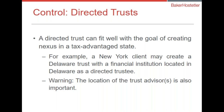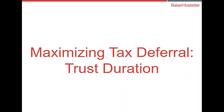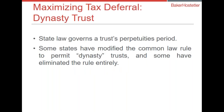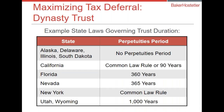This type of directed trust will only increase in importance as we continue to focus on state taxation. The next subject is maximizing tax deferral, also known as trust duration or the rule against perpetuities. A state law that governs the trust also typically governs the trust's perpetuities period. Traditionally that is lives in being plus 21 years. States have modified that common law rule over time to permit so-called dynasty trusts — some say the rule goes on for a certain number of years, some have eliminated it entirely and instead just require that the trustee have the power to sell assets during a particular period.